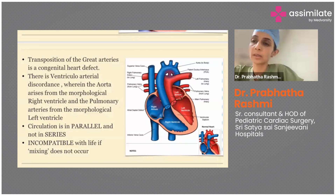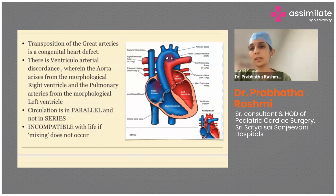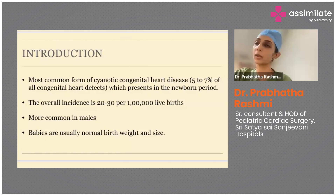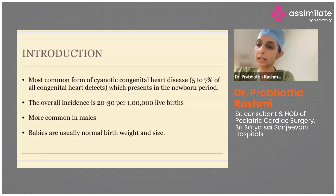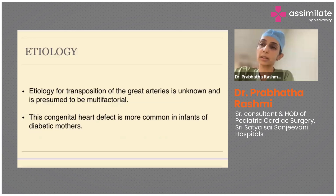This is the most common form of cyanotic congenital heart disease seen in the newborn period — almost 5 to 7 percent of all CHDs in the neonatal age will be transposition of great arteries. It's more commonly seen in male patients, and the overall incidence is 20 to 30 per one lakh live births. Babies are usually normal birth weight — in fact they may be slightly larger than usual. The etiology is presumed to be multifactorial, related to maternal, environmental, and genetic factors, and it is more common in older and diabetic mothers.